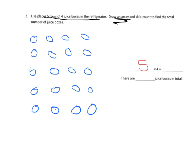Our multiplication fact is going to be 5 times 4 - five rows of four. That means our missing value, our product, is 20. So there are 20 juice boxes in total.